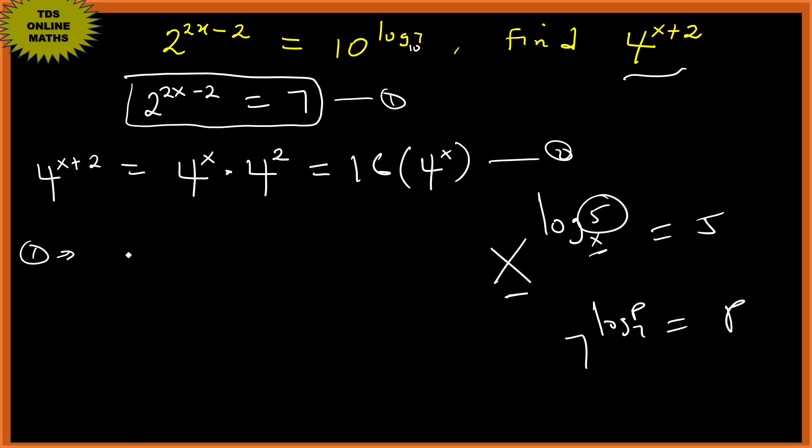Now from equation one, this one is the same as 2 to the power 2x times 2 to the power minus 2 equals 7. So we can see 2 to the power 2x times 1 over 2 to the power 2, which is 1/4, equals 7. So we can multiply that: 7 times 4 is 28.